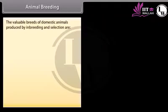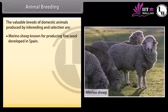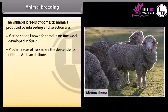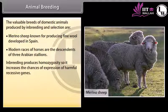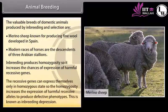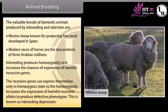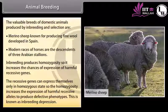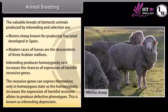Valuable breeds produced by inbreeding and selection include: 1. Merino sheep, known for producing fine wool, developed in Spain; 2. Modern races of horses, descendants of three Arabian stallions. Inbreeding produces homozygosity, increasing the chance of expression of harmful recessive genes. Since recessive genes can express themselves only in homozygous state, homozygosity increases the expression of harmful recessive alleles to produce defective phenotypes — this is known as inbreeding depression.